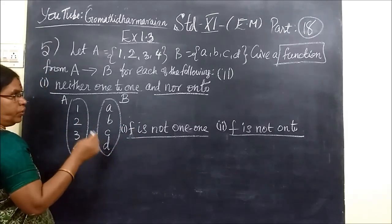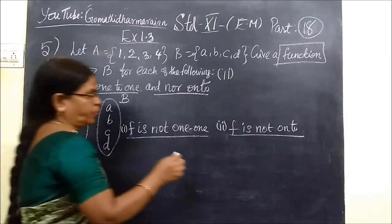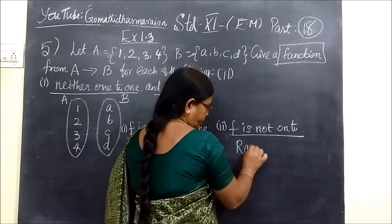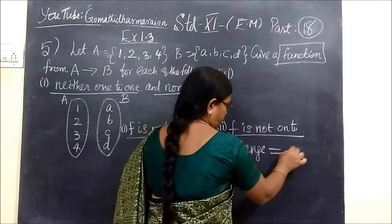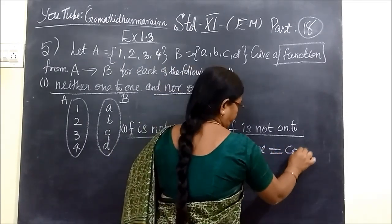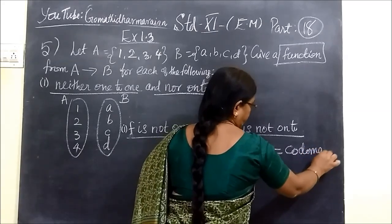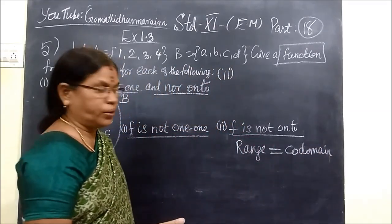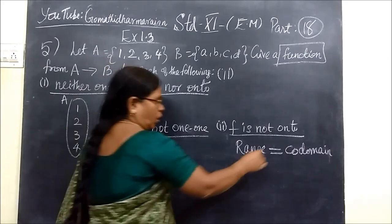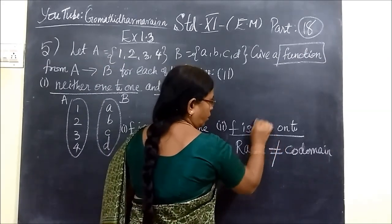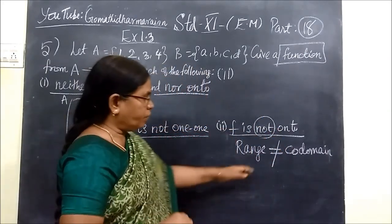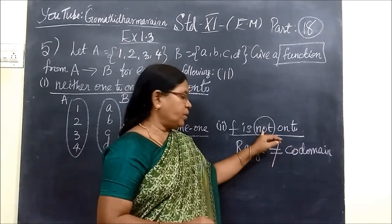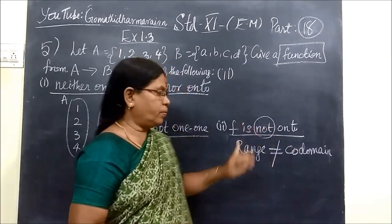We know onto function means range equals codomain. Range equal to codomain means it is an onto function. Not equal means not onto function.